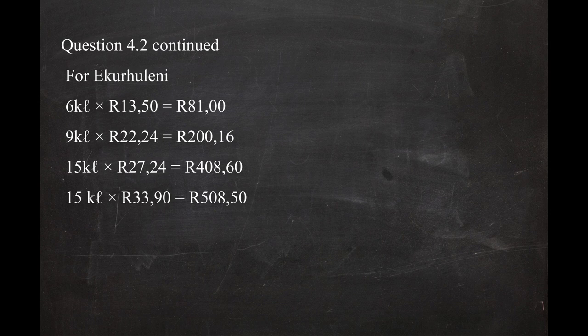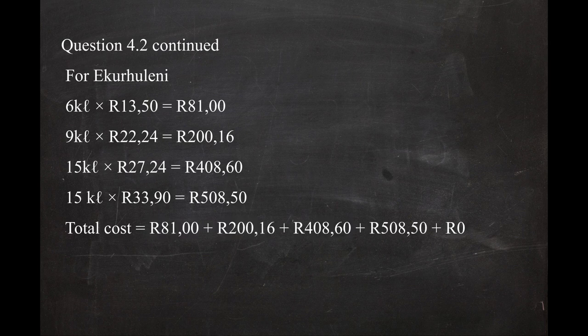The total water cost for 45 kilolitres in Ekurhuleni is the sum of all four steps. This gives a total cost of R1,198.26. Note that there is no fixed monthly cost for Ekurhuleni.